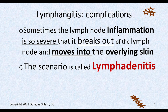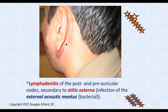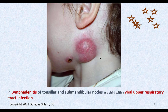If the bug is powerful and breaks out of the lymph node into the skin, it's called lymphadenitis. Here's an example of the postauricular and preauricular nodes invaded by powerful bacteria, broken loose out of the lymph node into the skin — this is lymphadenitis because the skin is red. Almost guarantee those distinctions will be on the test.